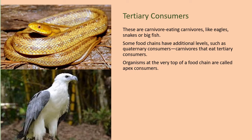snakes or big fish. Some food chains have additional levels, such as quaternary consumers — that is, carnivores that eat tertiary consumers. Organisms at the very top of a food chain are called apex consumers.